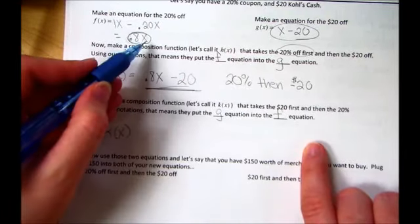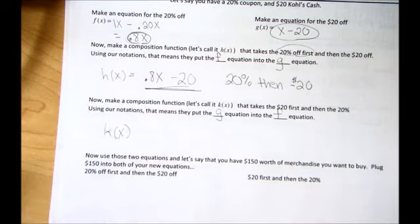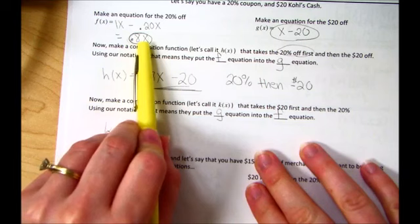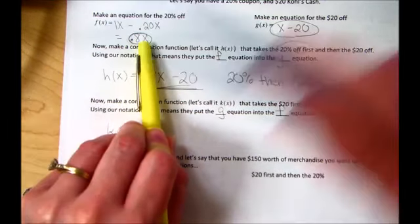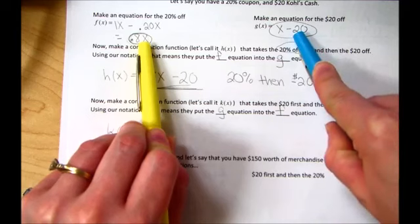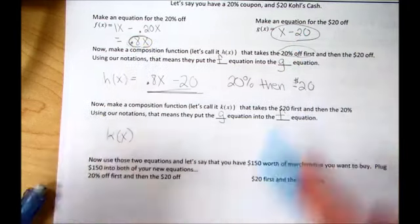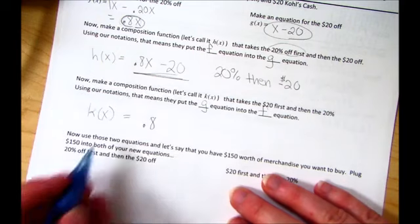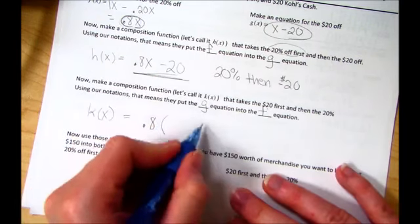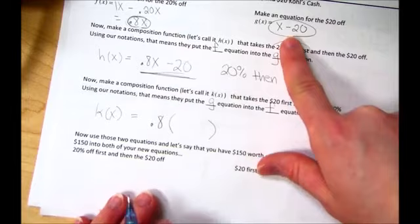So does everybody see that X right there? Remember, this X, this one that I'm pointing at right here with my yellow marker, this X is going to go away, and it's going to be replaced with this blue, where I'm pointing with the blue marker. Okay? So let's write that. We're going to take the 0.8, but instead of writing 0.8X, it's going to be 0.8 of X minus 20.